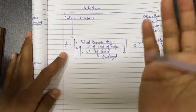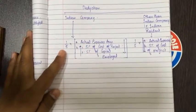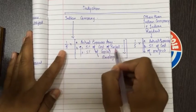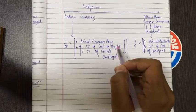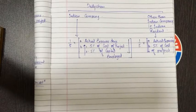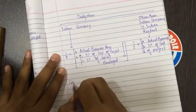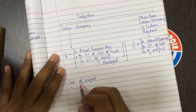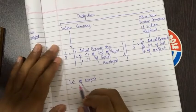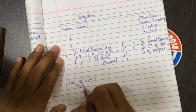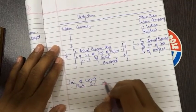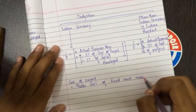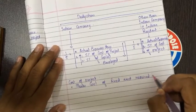Let's understand: actual expenses first, then 5% of cost of project. Cost of project is equal to the cost of fixed assets required in the new business.